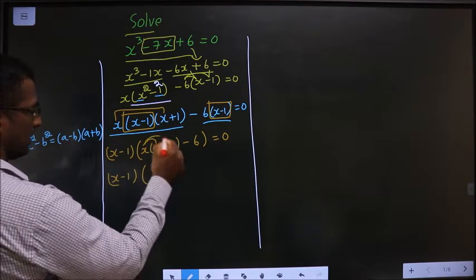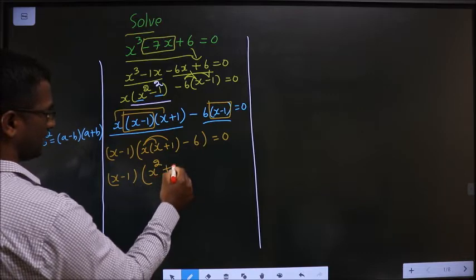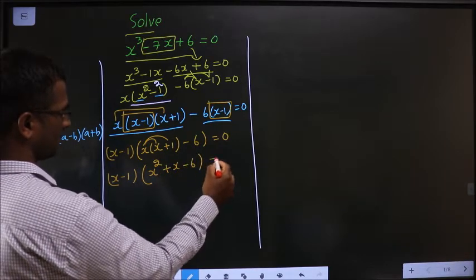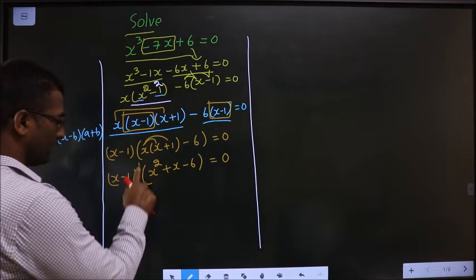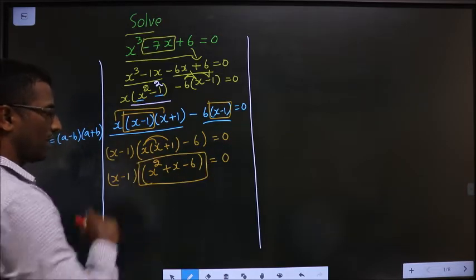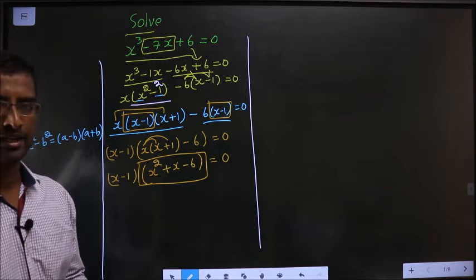Open this up. So what do I get? X square plus x minus 6 equal to 0. Now, what will you do? This is a quadratic, so factorize it.